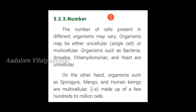The number of cells present in different organisms may vary. Organisms may be either unicellular or multicellular. Unicellular means having only a single cell — examples include bacteria, amoeba, chlamydomonas, and yeast. Multicellular organisms such as spirogyra, mango, and human beings are made up of few hundreds to millions of cells. In the human body, the number of cells is approximately 3.7 × 10¹³.